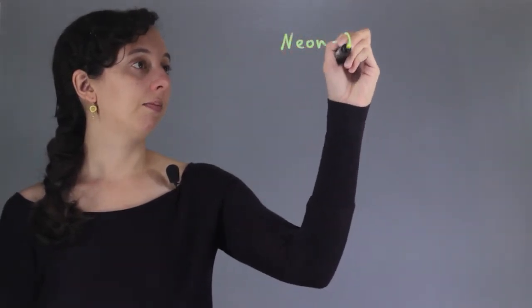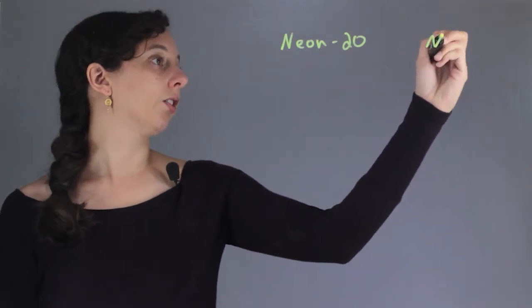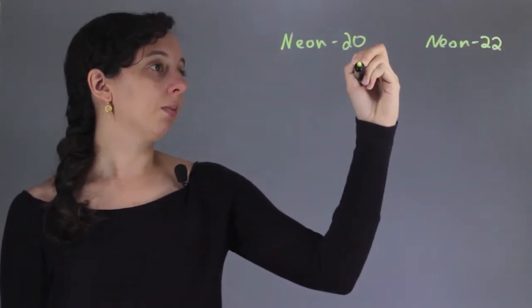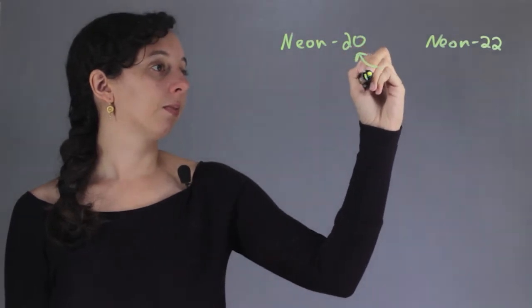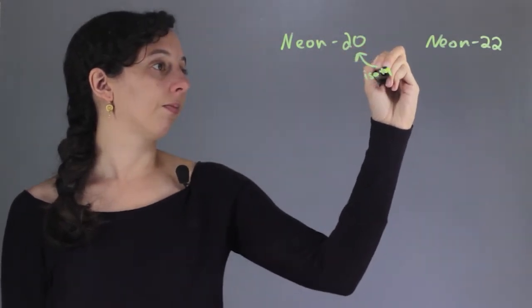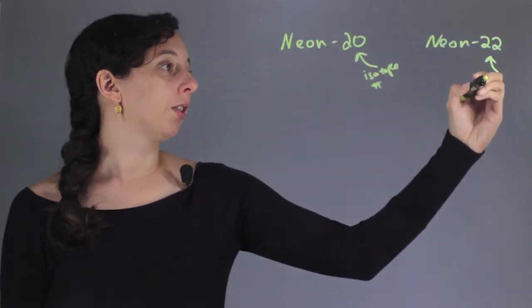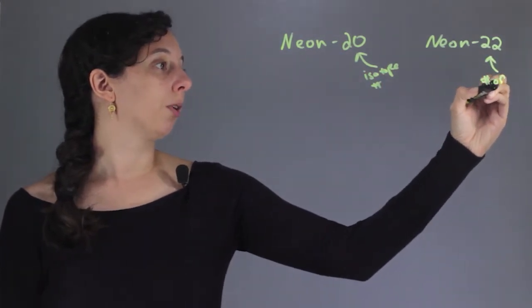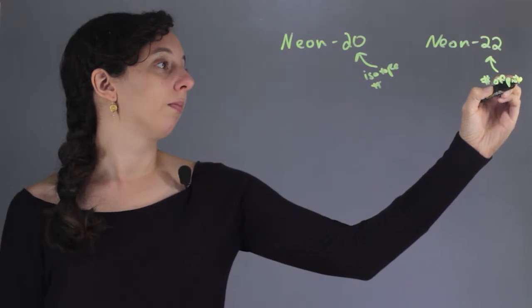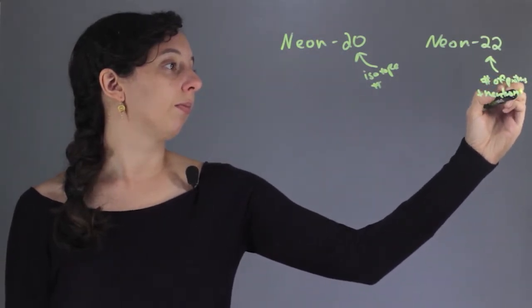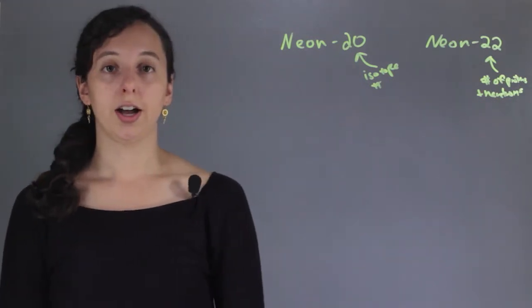We've got Neon-20 and Neon-22. So these numbers here are isotope numbers and they both determine the number of protons plus the number of neutrons in each atom.